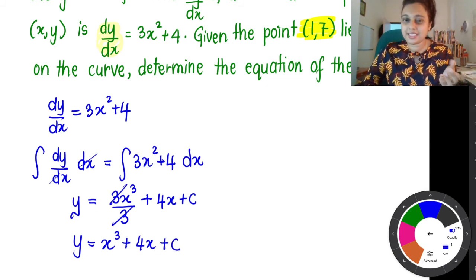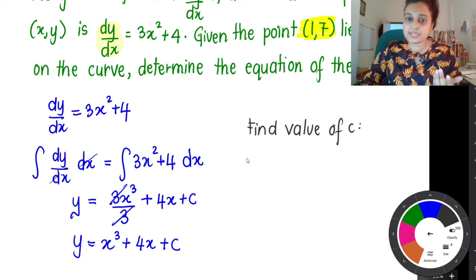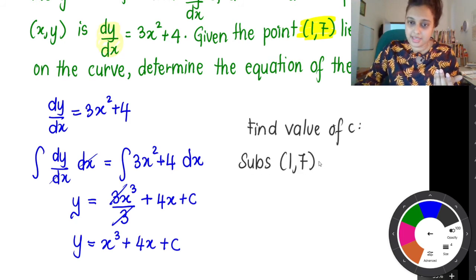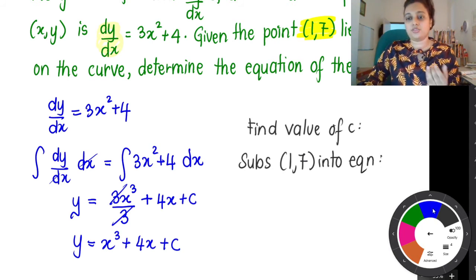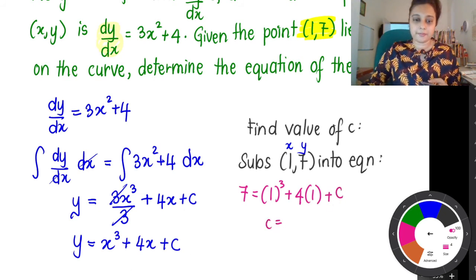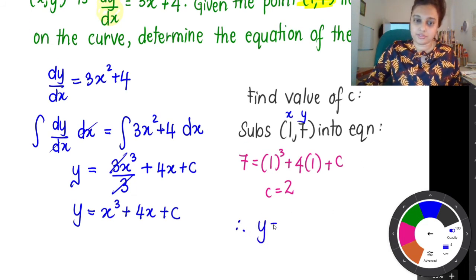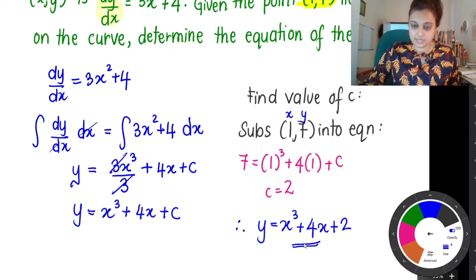So y = x³ + 4x + c. Now we already have the equation, but we still have c at the back, so we must find the value of c. Substitute the point (1, 7) into the equation — 1 is the x value and 7 is the y value. So: 7 = 1³ + 4(1) + c. Solving: c = 7 - 1 - 4 = 2. So c = 2. The final equation of the curve is y = x³ + 4x + 2.